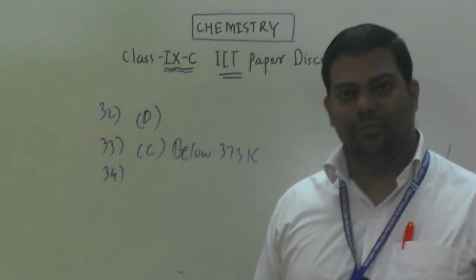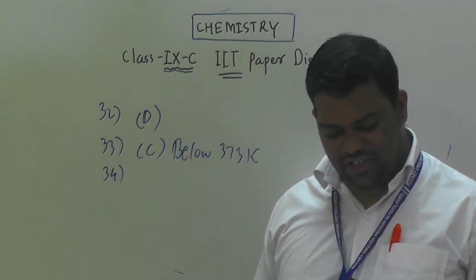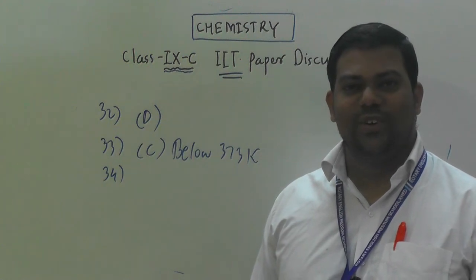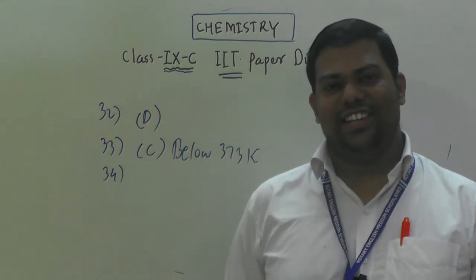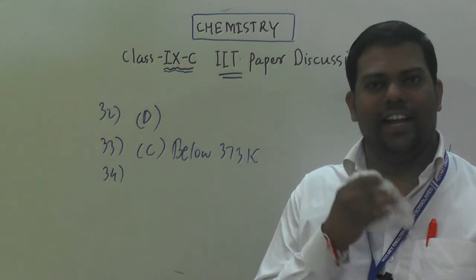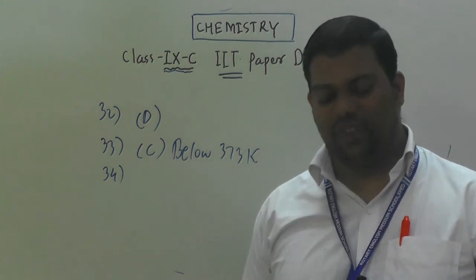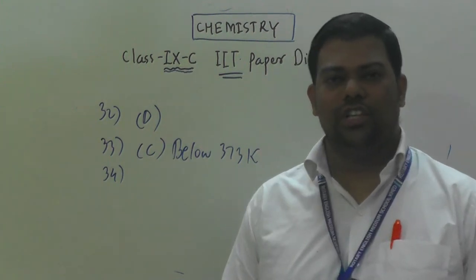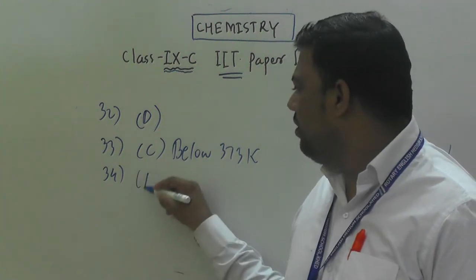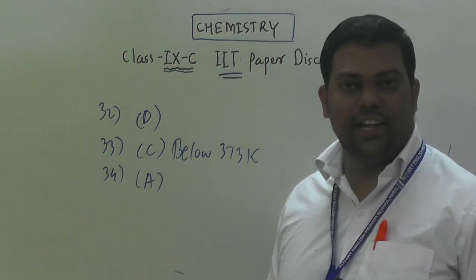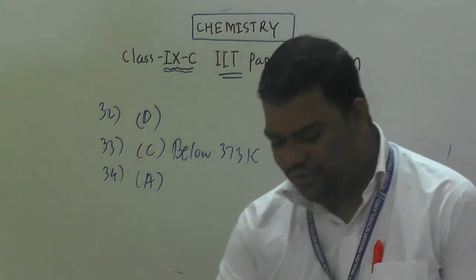Question number 34: at a melting point, kinetic energy remains constant and potential energy increases. The movement of molecules — kinetic energy — remains constant, and potential energy increases, which is why the substance melts. So option A: kinetic energy remains constant and potential energy increases.